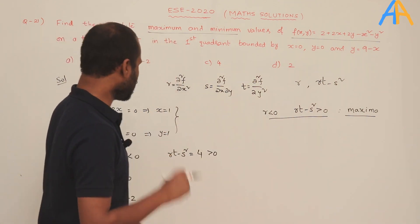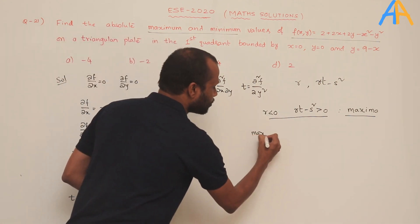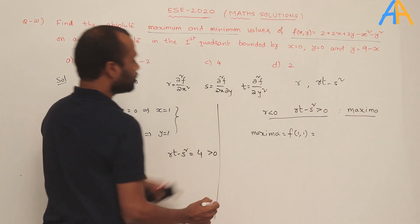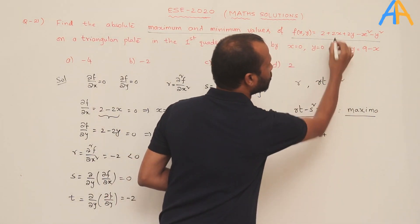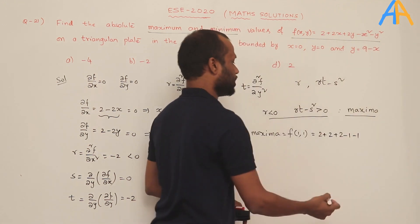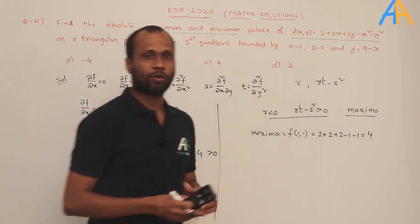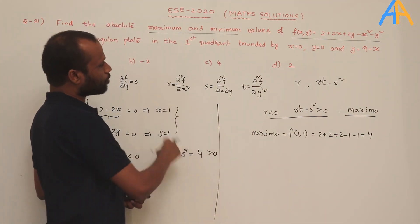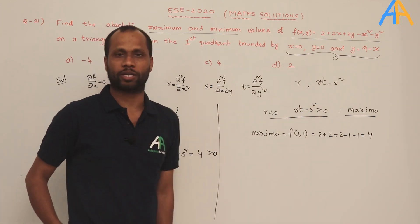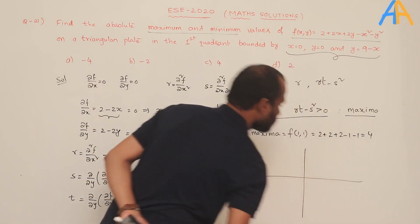We also need to check that the point lies within the triangular region. The boundaries are x = 0 (y-axis), y = 0 (x-axis), and y = 9 − x. For the line y = 9 − x: setting y = 0 gives x-intercept (9, 0), and setting x = 0 gives y-intercept (0, 9). The triangular region is bounded by these three lines.